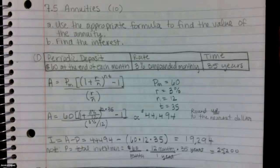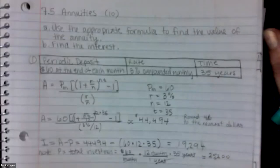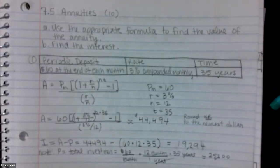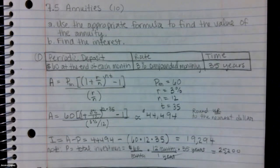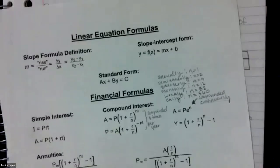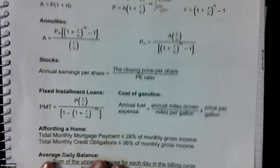Hello, class. In this video, we will be covering 7.5 annuities. In this section, we're ideally going to be concentrating on these two formulas here. I know I keep showing you this page in the last video, but this page is on the first page of the workbook.